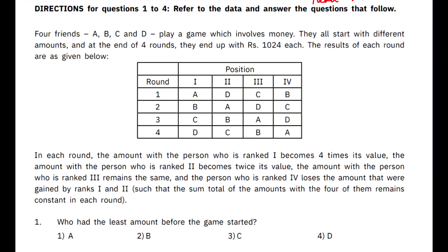Now, there are four friends here and there are four rounds here. At the end of every round, the numbers are changing. But one important thing given to us is that at the end, that is at the end of round four, everyone will be left with 1024 rupees. This is something interesting. 1024 rupees is the last amount with which all of them will be left at the end of the round four.